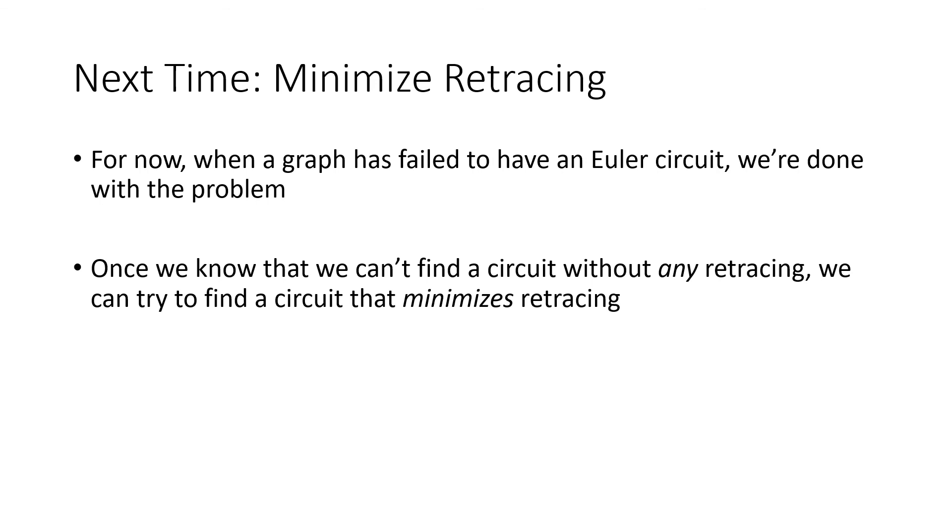So next time, what we're going to do is sort of take the next step in these problems. For now, what we've done is when we've seen a graph that doesn't have an Euler circuit, we just say that, and then we stop. But what we might like to do, if we consider the previous example, that inspector we now know cannot walk over all the bridges without retracing their steps. So we know there's going to have to be some retracing of our steps. So what we want to do is try to minimize that. What can we do to find the least number of retraced steps? And that's what we're going to learn about next time.